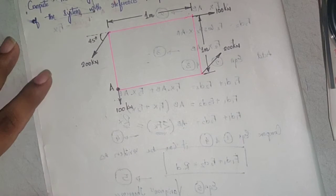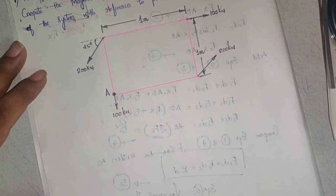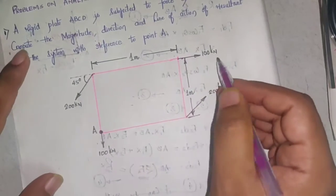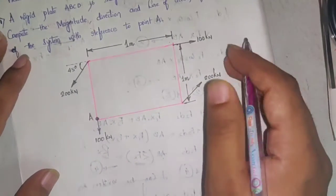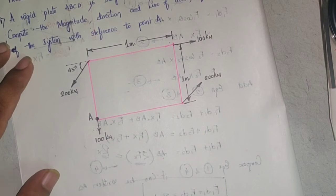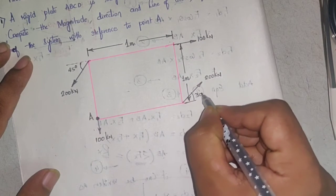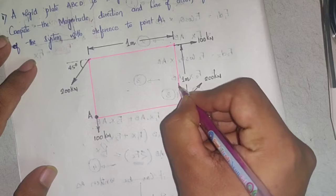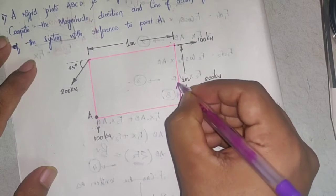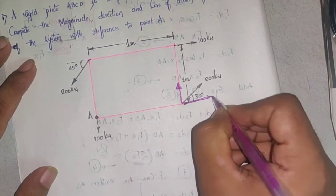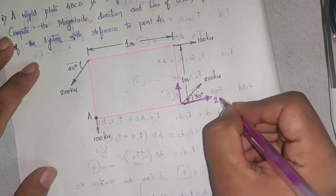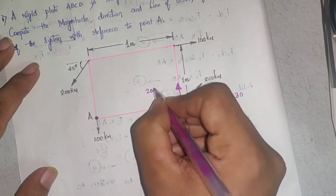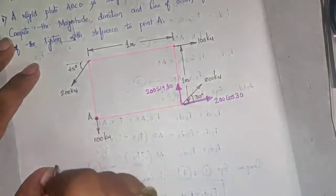First, you have to resolve the forces that need to be resolved. 100 kN is acting in the horizontal direction, so it has no effect in the y-direction — no problem with this. But this 200 kN is making an angle of 30 degrees, so it should be resolved first. The vertical component will be 200 sin 30 and the horizontal component will be 200 cos 30.